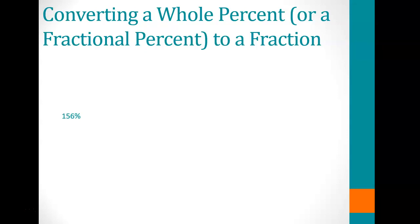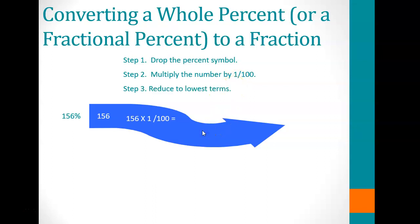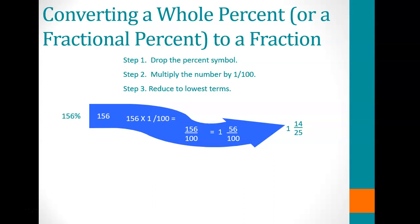Converting a whole number percent to a fraction: if you have 156%, drop the percent sign to get 156, then multiply by 1 over 100 to get 156 over 100. Dividing 100 into 156 gives a whole number of 1 with remainder 56. Convert 56 over 100 to its lowest terms by dividing both by 4, giving 14 over 25. So 156% equals 1 and 14/25.